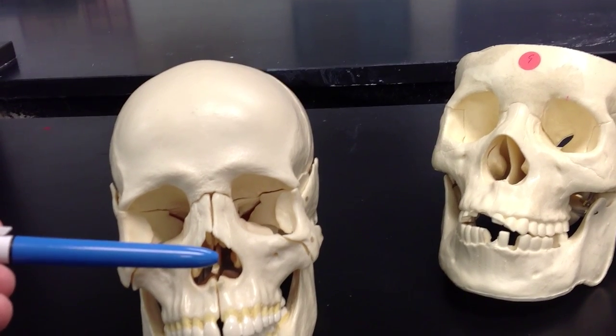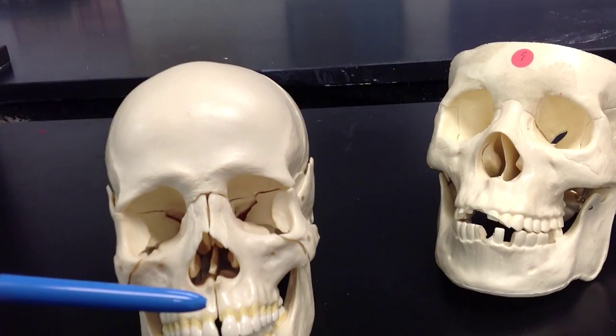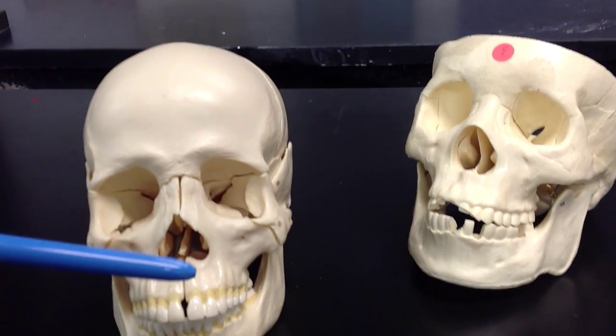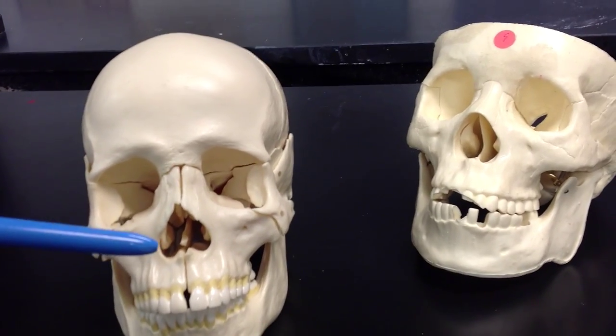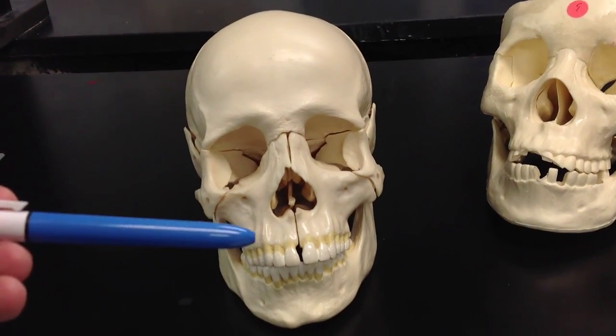Right within, we're going to have our vomer bone. On either side of the vomer bone in this area, we're going to have the maxillae. Notice that the maxillae also forms the roof of the mouth. So if you open your mouth, put your tongue to the top, that tough bone that you feel is the maxillae.